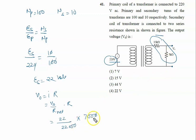So we will calculate: zero cancel, 22 cancel, it is only 7 volt. So the right answer to this problem is option one, that is 7 volt.